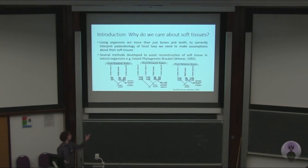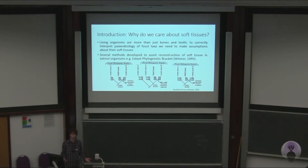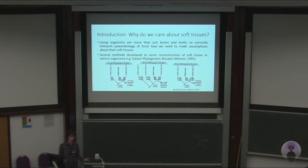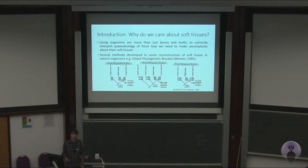First question: why do we care about soft tissue? We're paleontologists, we deal with hard tissue, bones and teeth. But living organisms are more than bones and teeth — they've got muscles, they've got blood vessels. And if you want to understand the paleobiology of extinct taxa, you need to understand what their soft tissues are doing and make assumptions about what the soft tissues were like. For my work, that's mostly about muscles, because muscles determine ecologically important things like how hard you bite and how fast you move.